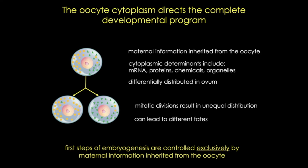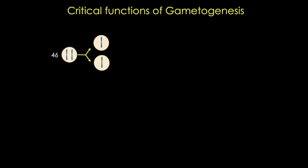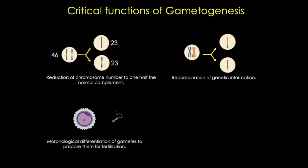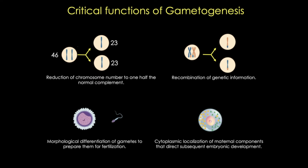Let's summarize gametogenesis. First, gametogenesis ensures that the chromosome number is reduced to half. Second, it allows for recombination of genetic information that generates variability. It allows for morphological differentiation of the gametes and begins to prepare them for fertilization. And finally, during this process, maternal factors are differentially localized in the oocyte.